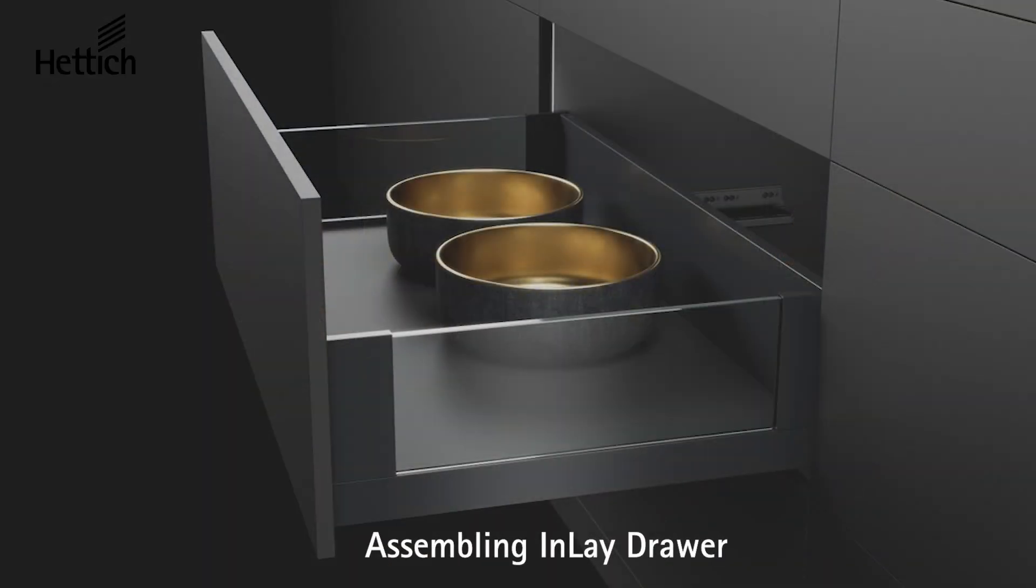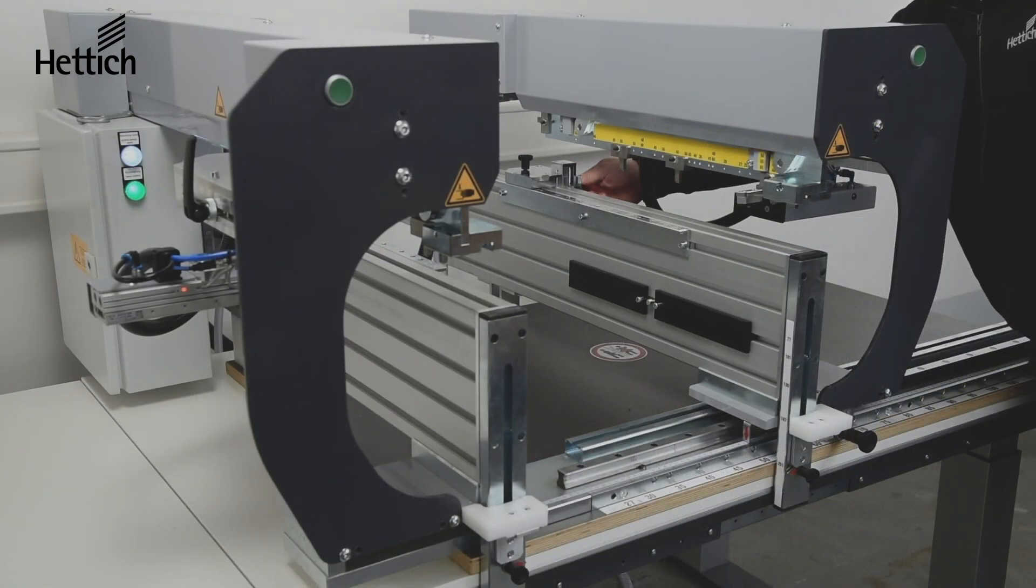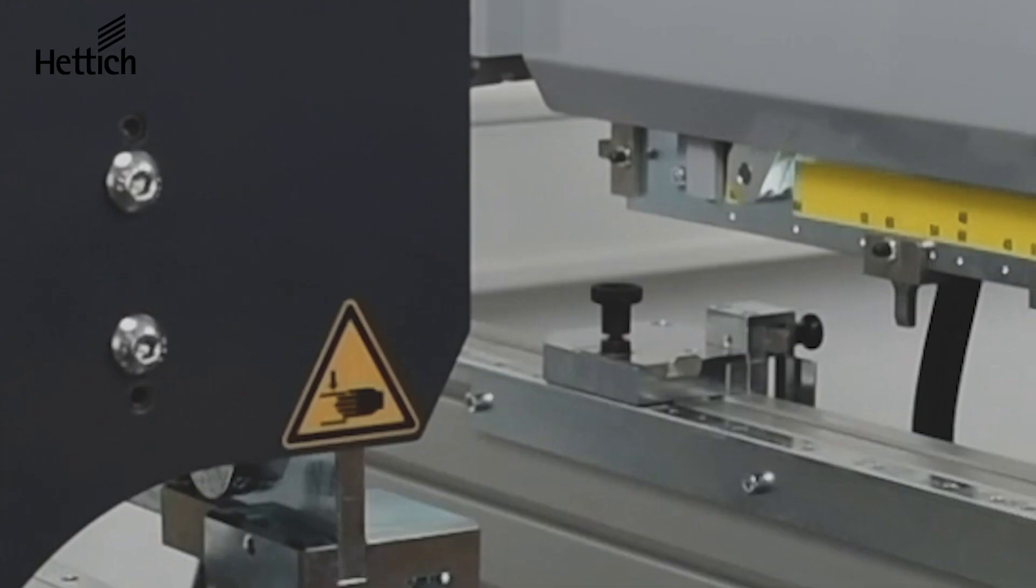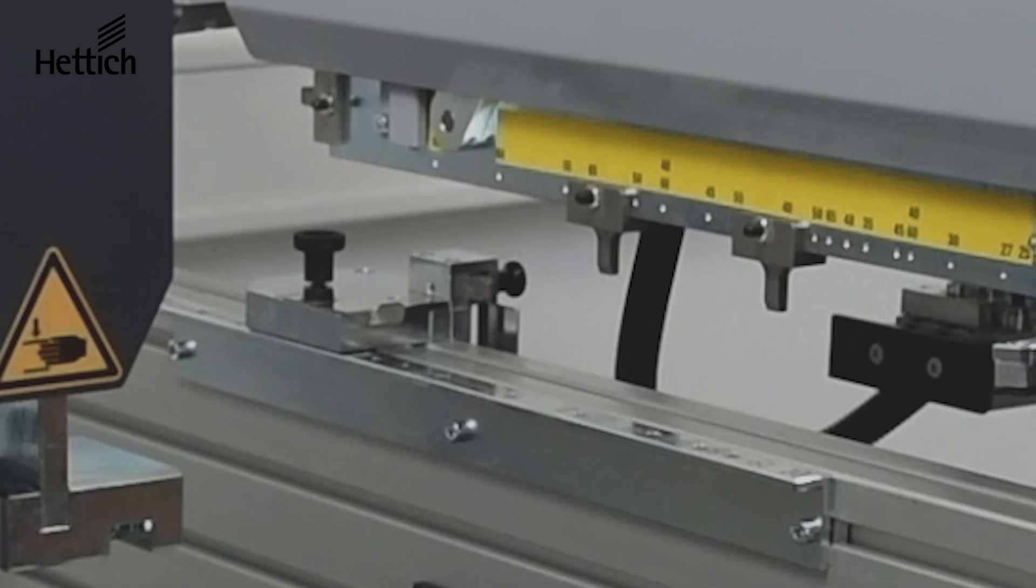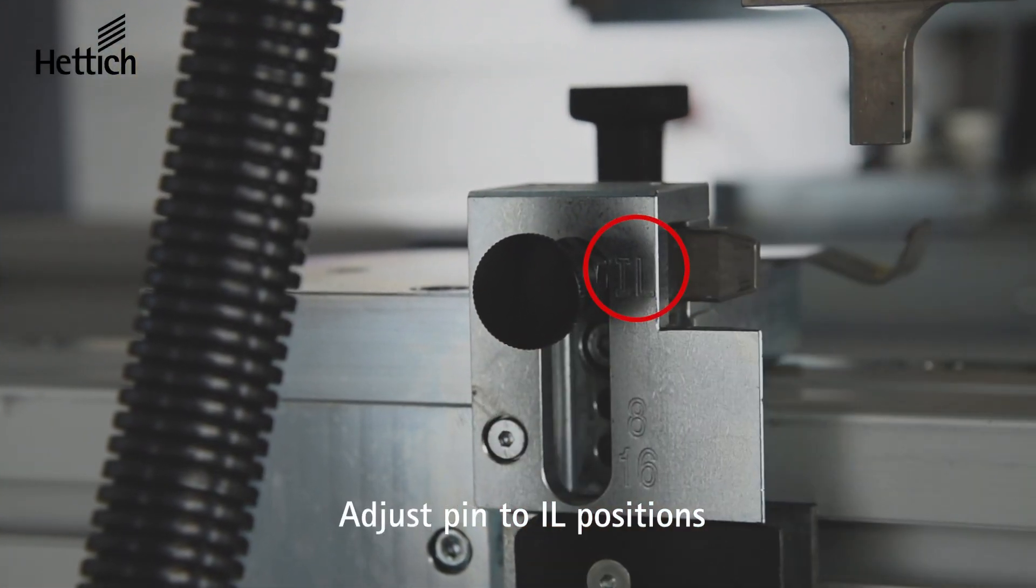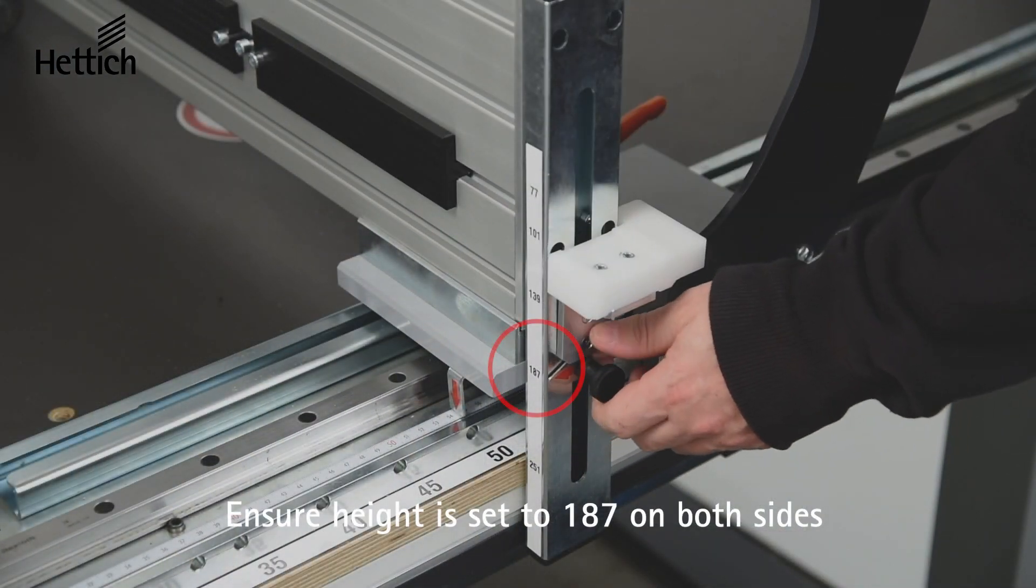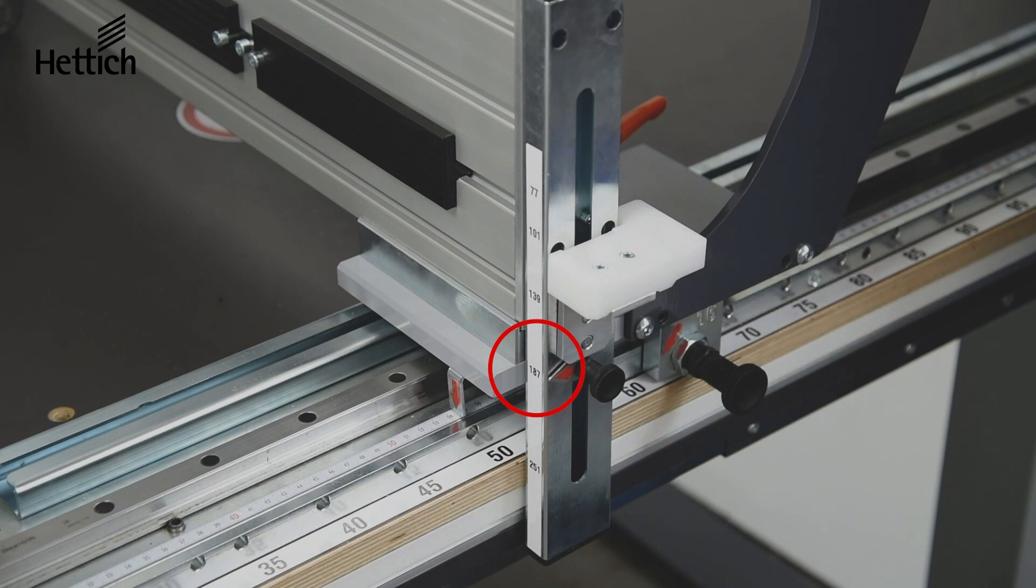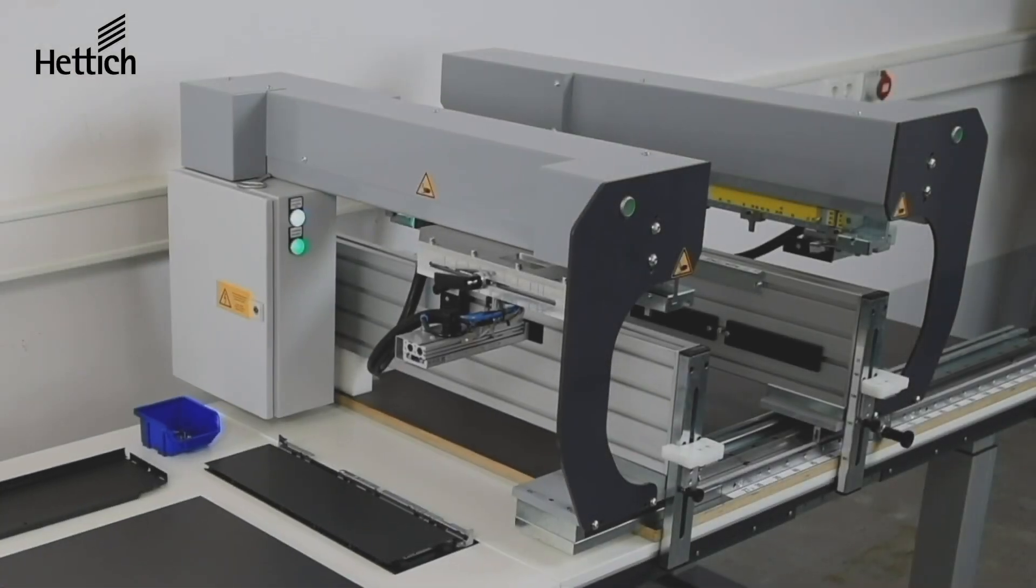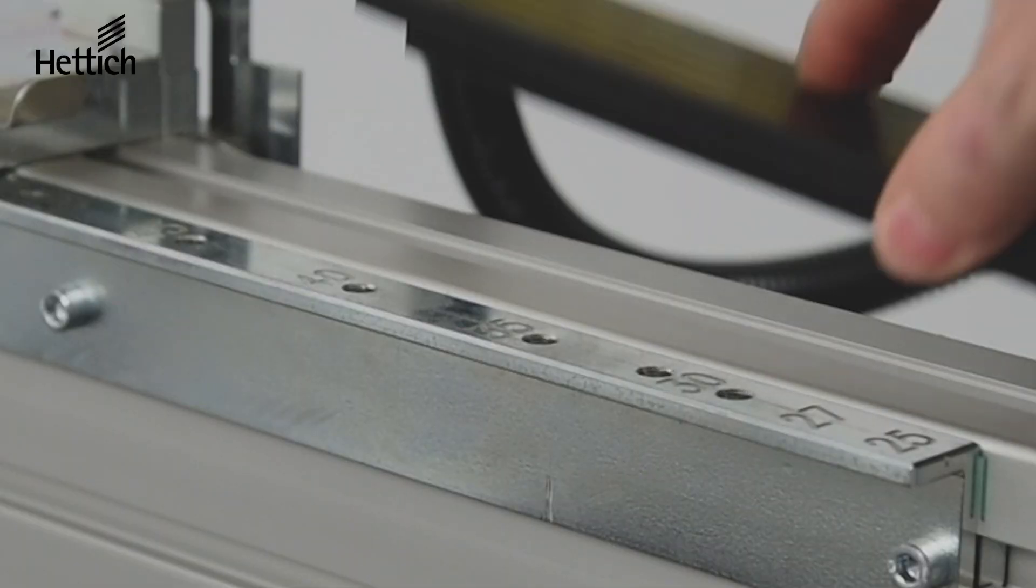The AVENFIT 300 can also be used to assemble the Avantech U inlay drawers. Again set up your machine for the proper bottom panel width and ensure that the inserting pins are in their correct position as per the profile length. Then change the side pins on both sides of the machine to the IL position. Make sure the back panel height is set to 187 on both sides of the machine, then follow the same procedure to assemble a drawer as shown before.